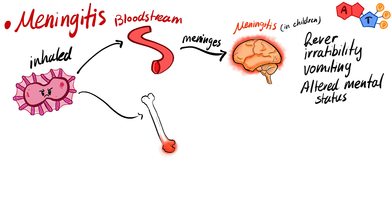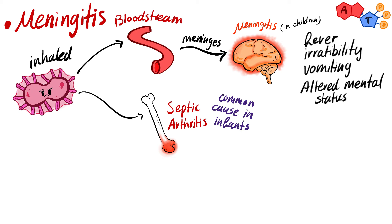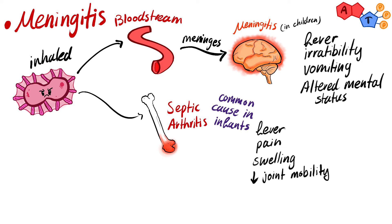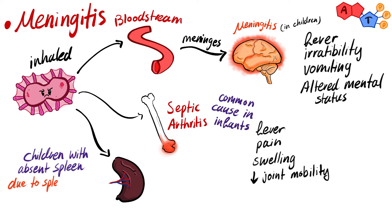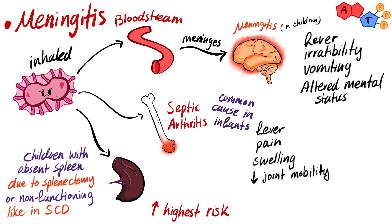Next is septic arthritis. Haemophilus influenzae type B is a common cause of septic arthritis in infants, presenting with fever, pain, swelling, and decreased joint mobility. It's important to know that children with absent spleens — such as in cases of splenectomy — or non-functioning spleens, as in sickle cell disease, are at the highest risk of infection with H. influenzae type B, since the spleen is the most important organ in fighting encapsulated organisms.